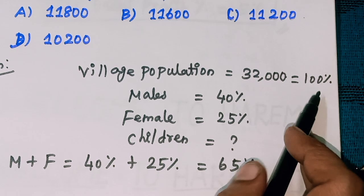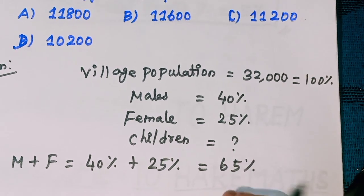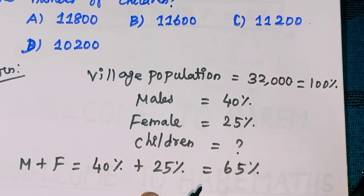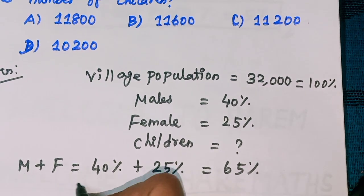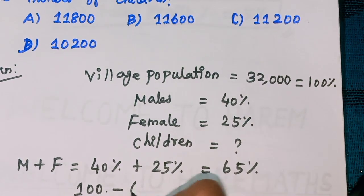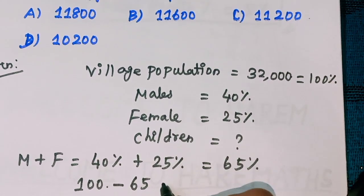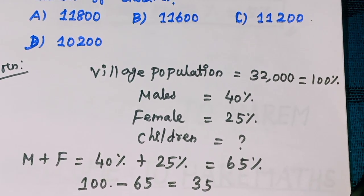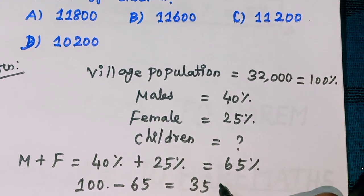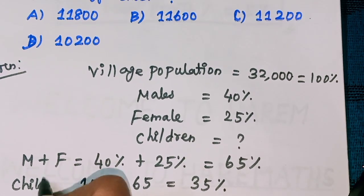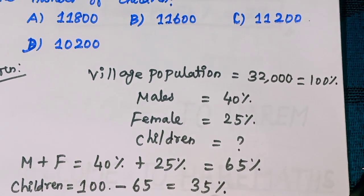100 minus total, minus sum of male and female percent equal to 65%. Total minus, so 100 minus 65 equals 35. 100 minus 65 equals 35% for children percent. So children equal to 35%.